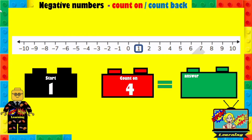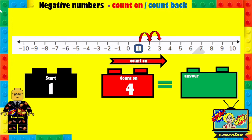So we start at 1, and when we count on we're going to move to the right. Now we're going to jump 4 times: 1, 2, 3, 4. So your answer should have been 5.